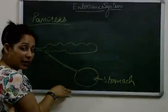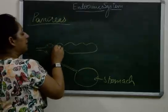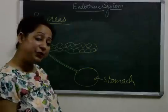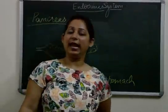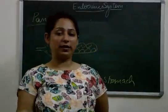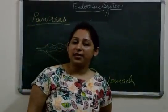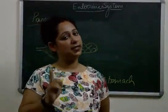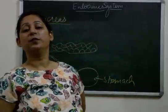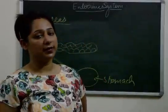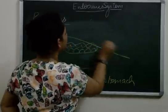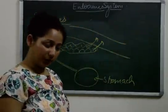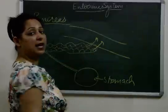The pancreas is made up of cells that act as endocrine in nature. In this way, the pancreas acts as both exocrine and endocrine. The cells of the pancreas pour their secretions directly into the bloodstream, which is why they act as endocrine in nature.